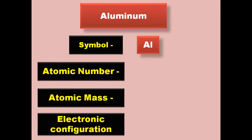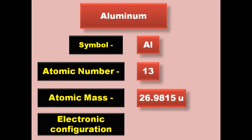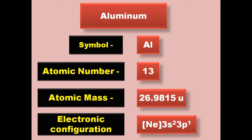Aluminium has symbol Al, atomic number 13, atomic mass 26.9815, electronic configuration [Ne] 3s2 3p1. Aluminium is a post-transition metal and exists in solid form at room temperature.